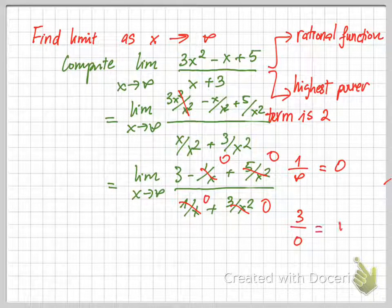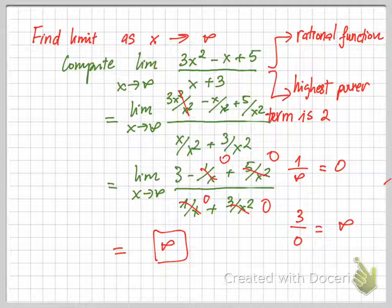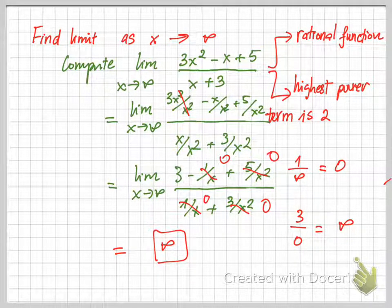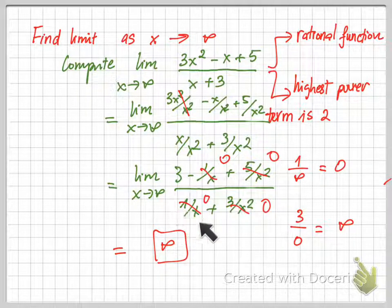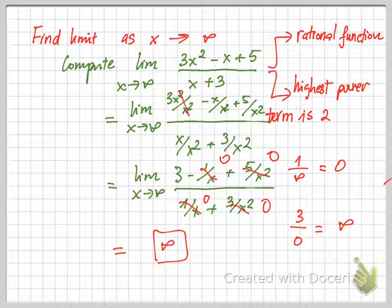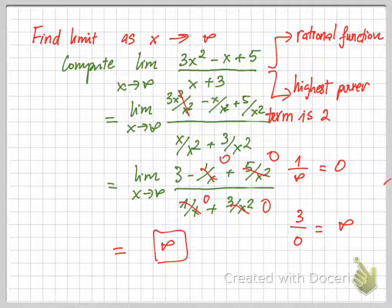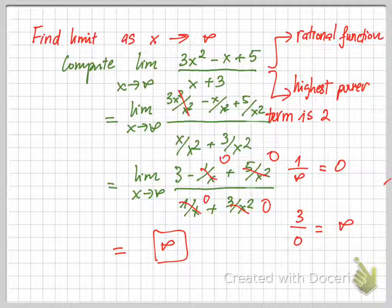After plugging infinity into x, these four terms become zero. The only non-zero constant term left is 3 in the numerator, and the denominator is washed out to zero. In the limit context, a constant over zero gives infinity. So the limit of this function is infinity.